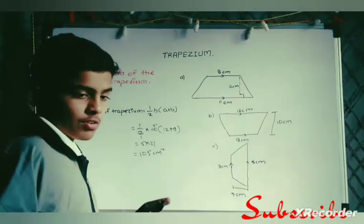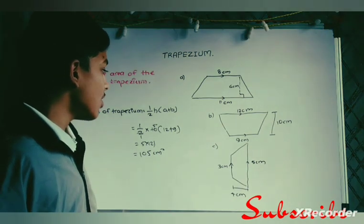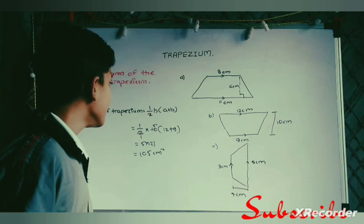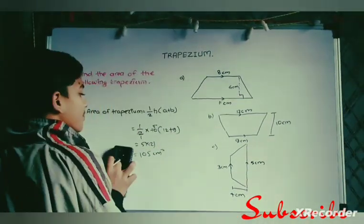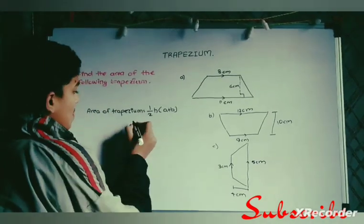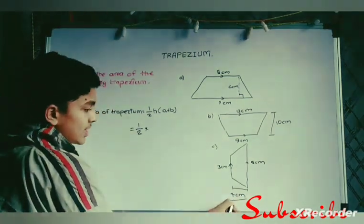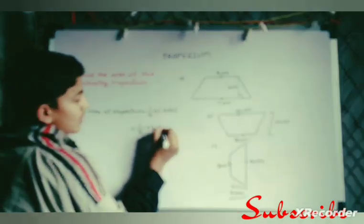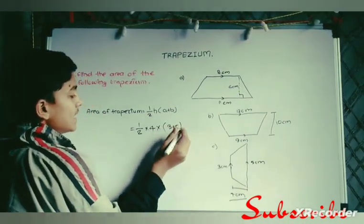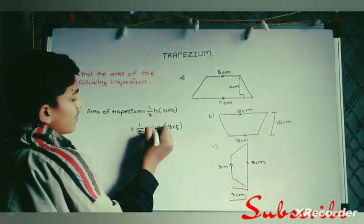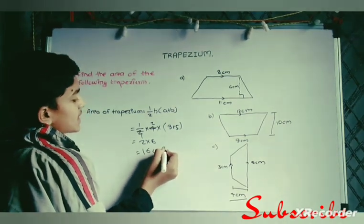First we have to write all the information and then write the formulas which are related to the formula of area of trapezium. Here the formula will be 1/2 multiply by height 4cm in bracket 3 plus 5. These are the parallel sides, we have to add them all. Simplifying it we will get 2 multiply by 8. The answer came as 16 square cm.